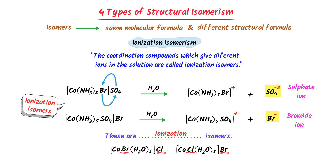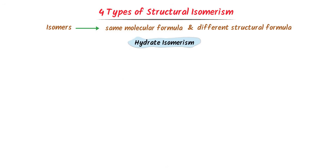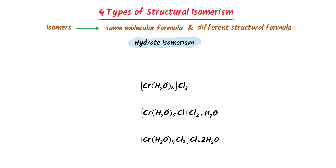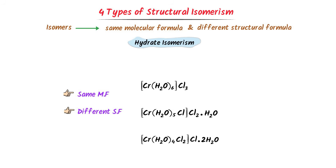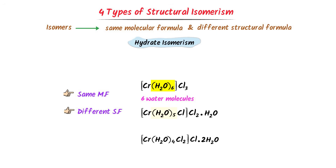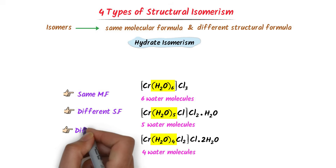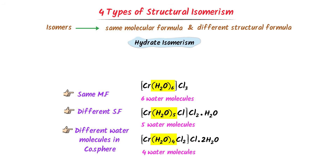The second type of structural isomerism is hydrate isomerism. Consider three coordination compounds that have the same molecular formula but different structural formula. In the first compound, six water molecules are present in the coordination sphere; in the second, five water molecules; and in the third, four water molecules. They have a different number of water molecules in the coordination sphere, so they are called hydrate isomers.